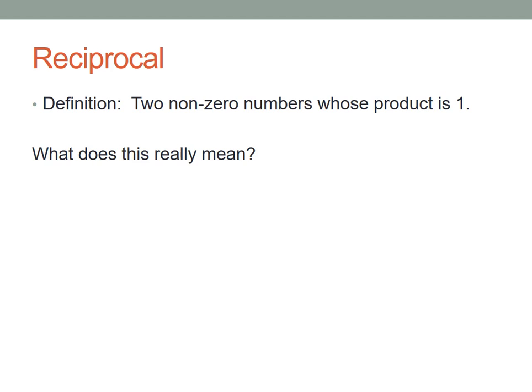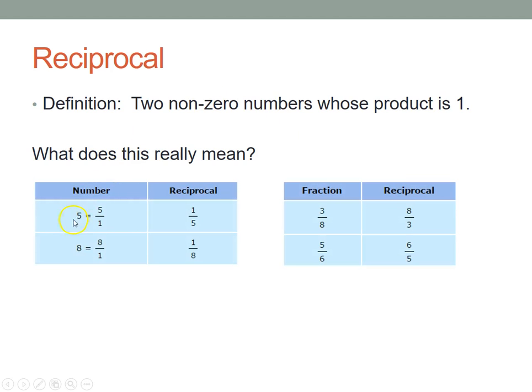So the definition of reciprocal is two non-zero numbers whose product is 1. So what does this really mean? Let's take a look at this. If the number is 5, we can write that as 5/1 as a fraction. And the reciprocal, we'd flip them, it would be 1/5. If we multiply 5/1 times 1/5, it would equal 1. Here's another example, 8, 8/1, the reciprocal is 1/8. We can also start with a fraction, 3/8, the reciprocal would be 8/3. We're flipping the numerator and the denominator. And here we have 5/6 and we're flipping it to 6/5. So that's the reciprocal.